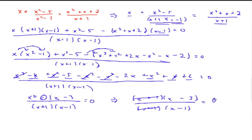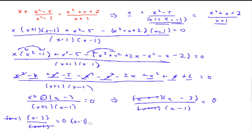This whole thing is equal to 0, so what we have in the next step is x minus 3 over x minus 1, which is equal to 0. Now let's multiply both sides by x minus 1 — that cancels out — and anything times 0 is 0. So we're left with x minus 3 equals 0. Adding 3 to both sides gives us x is equal to positive 3, and that's our final answer.